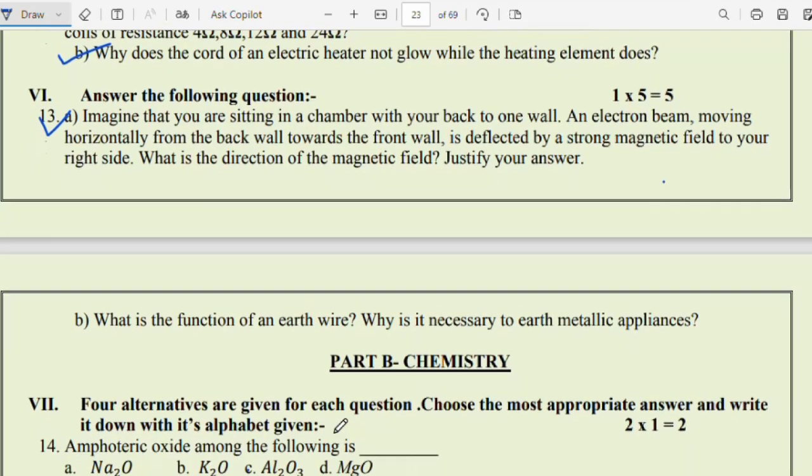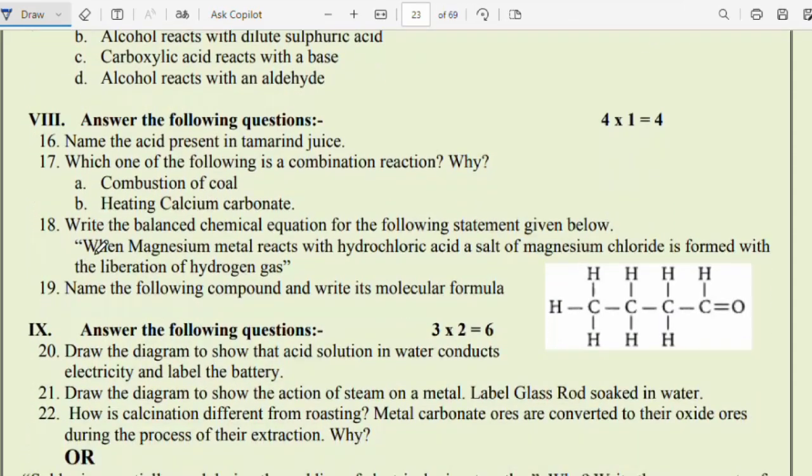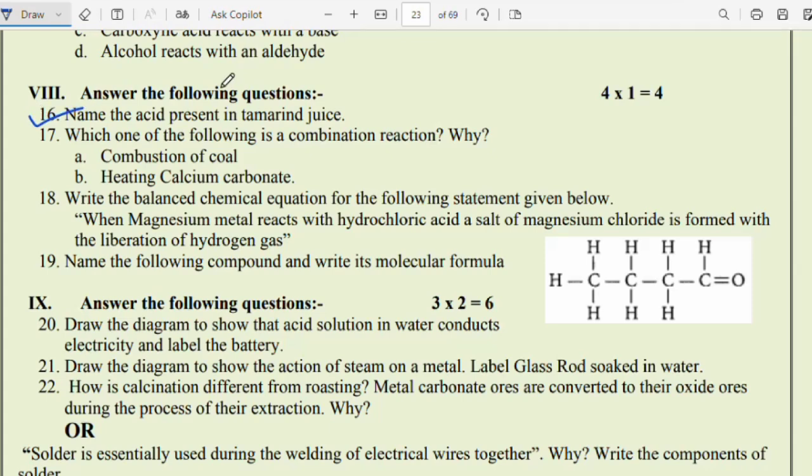Part B, Chemistry. Here also two multiple choice questions. Question 14: amphoteric oxides among the following? Al2O3 is the amphoteric oxide. Option C is the right answer. Question 15: ester will be formed when alcohol reacts with carboxylic acid. Option A is the right answer. Next, one word answer question. Question 16: name the acid present in tamarind juice. Tartaric acid. Just write tartaric acid, you'll get one mark.